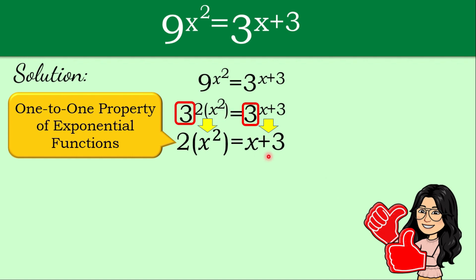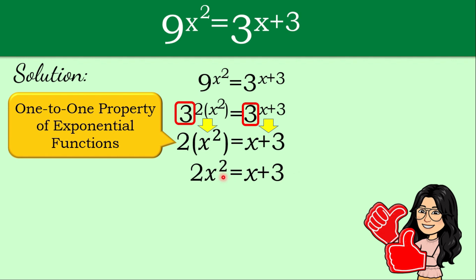Using the one-to-one property of exponential functions, 2 times x squared equals x plus 3 — that is, 2x squared equals x plus 3. As you can see, we cannot combine similar terms here, but we have a squared term, a variable x, and a constant. So what we are going to do now is to form a quadratic equation.